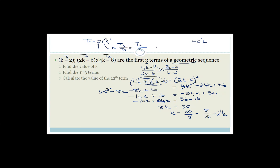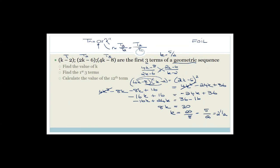Now that k equals 5 over 2, they want the first three terms. We substitute k into each expression. The first term is 5/2 minus 2, which equals 1/2. The second term is 2 times 5/2 minus 6: these cancel to give 5 minus 6, which is minus 1. The third term is 4 times 5/2 minus 8: 4 and 2 cancel to give 2 times 5 minus 8, which is 10 minus 8, equals 2. So the first three terms are 1/2, minus 1, and 2.